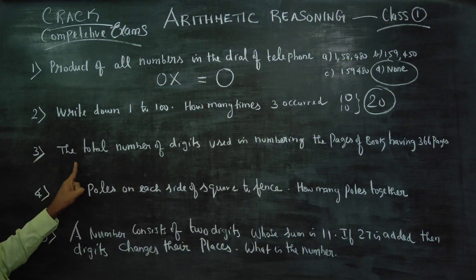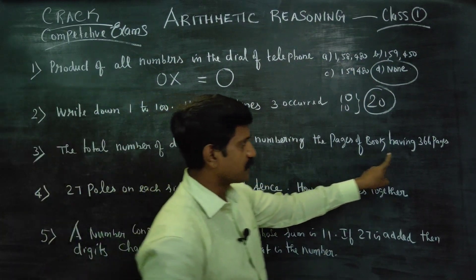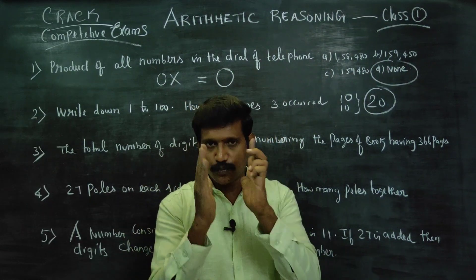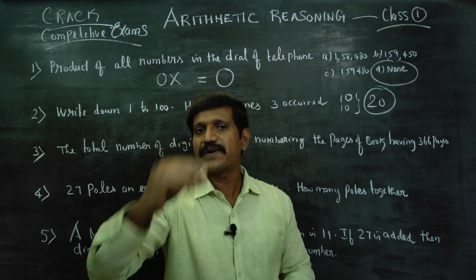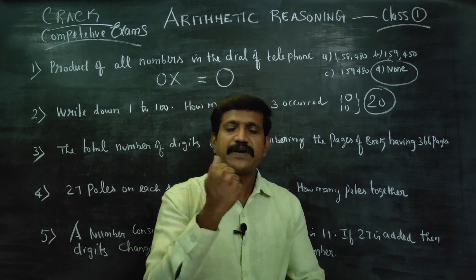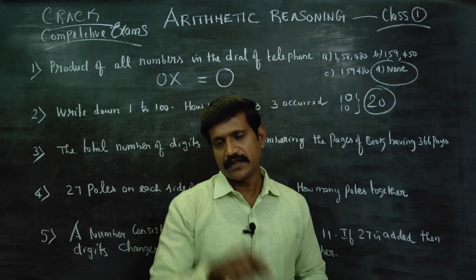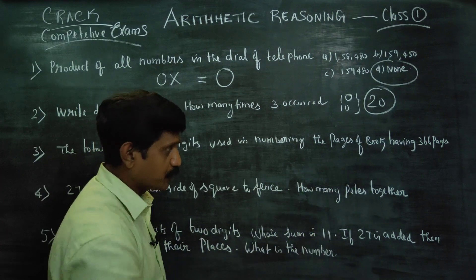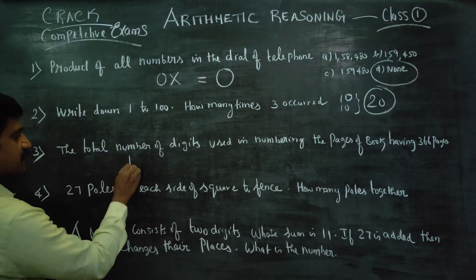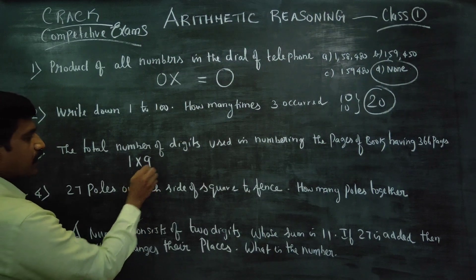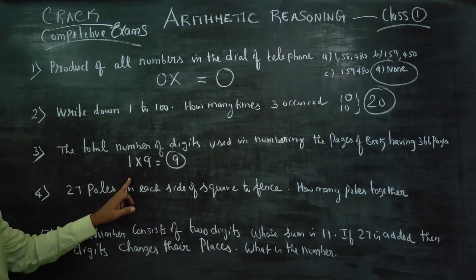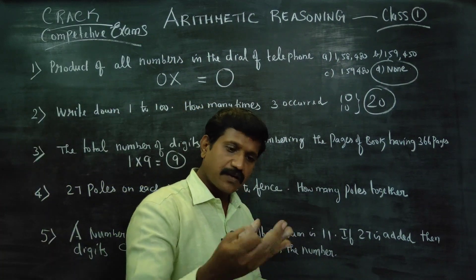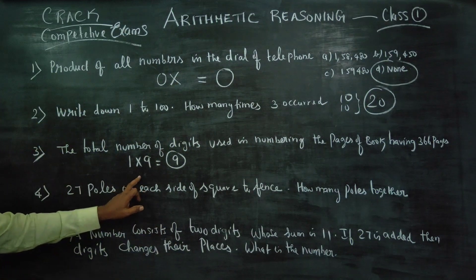Next: the total number of digits used in numbering the pages of a book with 366 pages. 1, 2, 3, 4, 5, 7, 8, 9 — then single digit: you can find out how many are printed.